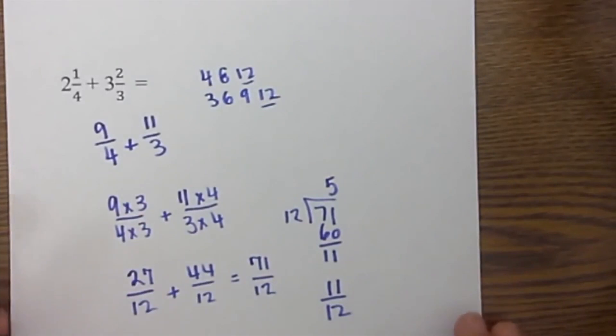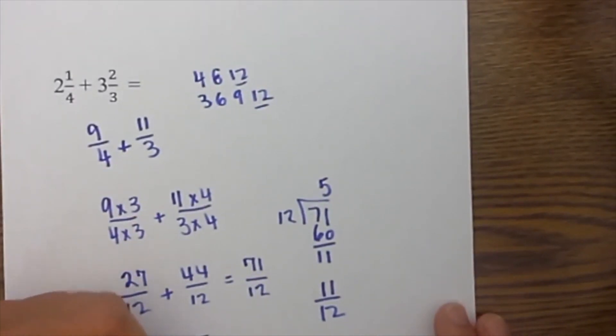And 11 is a prime number so it is reduced. So it is 5 and 11/12.